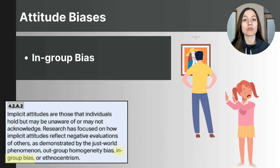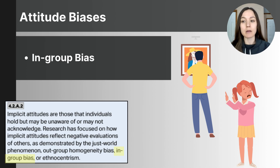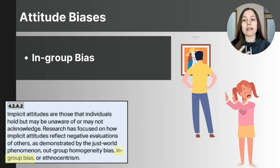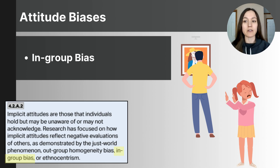We can also have implicit attitudes towards our in-group and out-groups. An in-group refers to a group of individuals we identify with and feel a sense of belonging to — sharing a characteristic like neighborhood, friend group, activity, or ethnicity. An out-group is a group we do not belong to and may perceive as separate or different. People often see their in-group more favorably, which is called in-group bias — the tendency to favor members of one's own group over those of other groups.